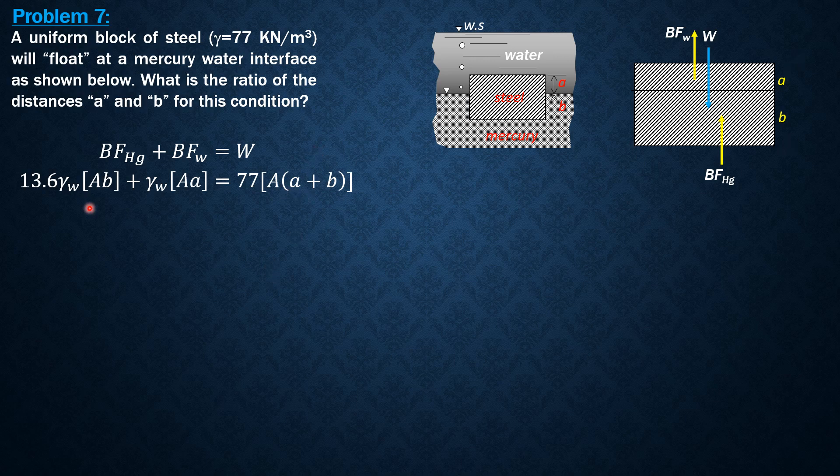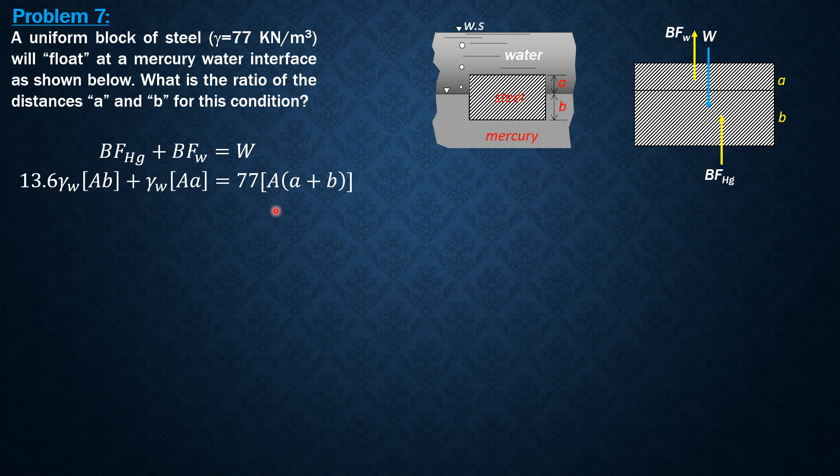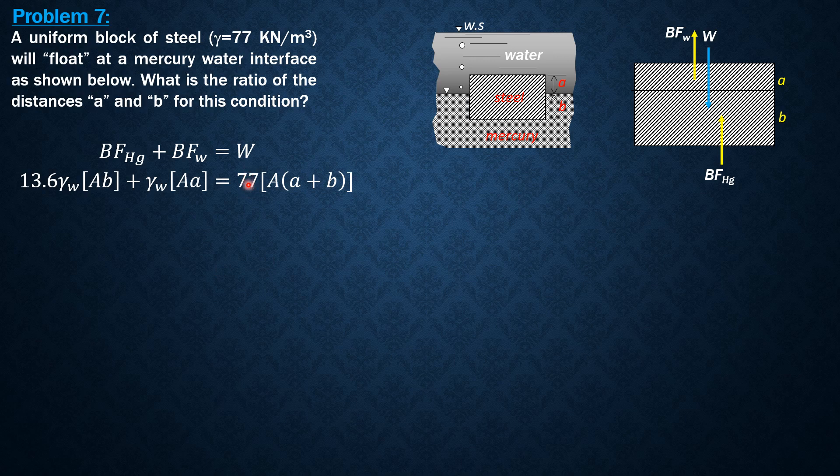Dividing everything by area over gamma of water, where gamma of water is 9.81 kilonewtons per cubic meter to be consistent with 77 kilonewtons per cubic meter. We can cancel A and gamma of water in the left terms, in the left side of the equation.